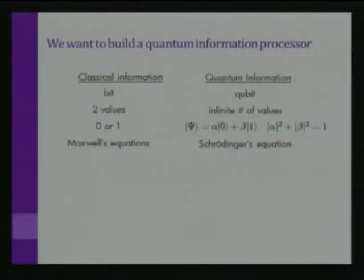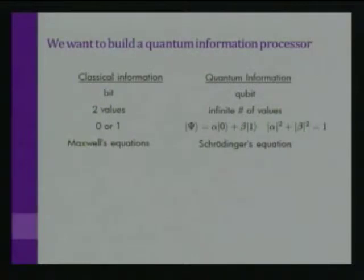Why do we want to build a quantum information processor? In classical information, we store all our information in a bit. The bit can take on two values, 0 or 1, and we control this bit using what we know about Maxwell's equations, which controls the evolution of our bit in our circuits and computers.